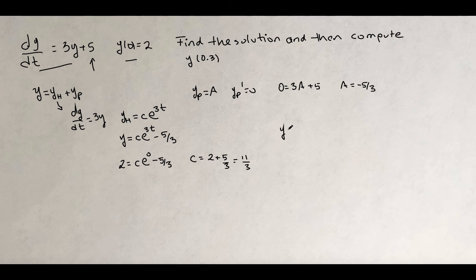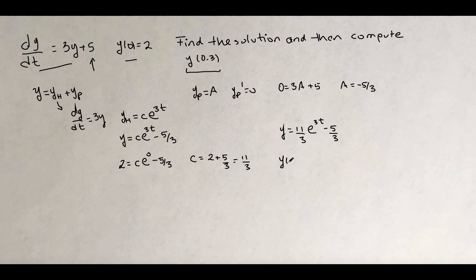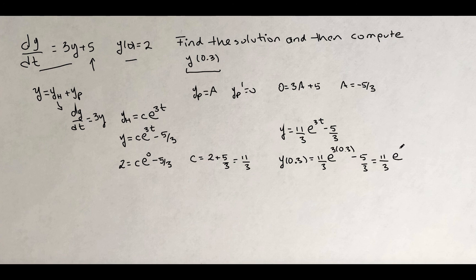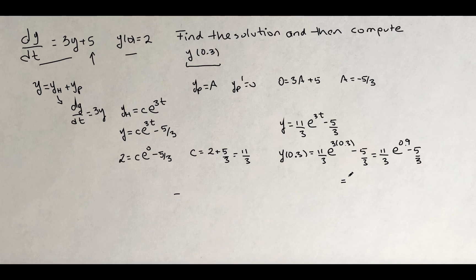The solution of the initial value problem is y equal to 11 thirds times e to the 3t minus 5 thirds. We also evaluate at t equal to 0.3: y of 0.3 equals 11 thirds times e to the 3 times 0.3, minus 5 over 3, which equals 11 thirds times e to the 0.9 minus 5 thirds, and this is equal to approximately 7.35188.